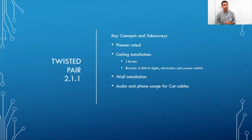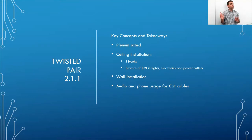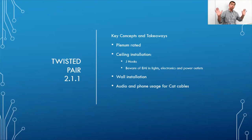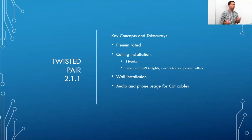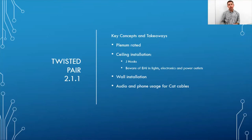Be aware of EMI from lights, electronics, and power outlets in ceilings. Pop a panel and you'll often find ducting, power cables for lights, light panels, and speaker wires — a lot to navigate both for safety and cable quality. Through-wall installations can be difficult; sometimes there's a dedicated pathway, other times you need a fish wire and pull string.